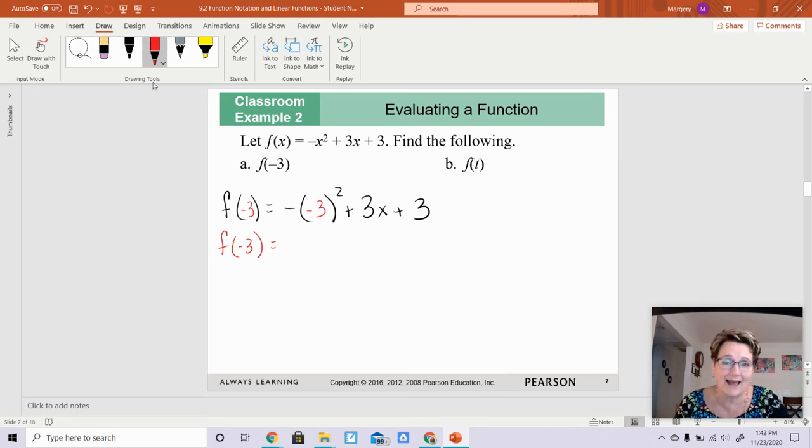Negative 3 squared is 9. 9 times the negative is negative 9. Now, I totally forgot to put a little blank spot here. That was my bad. Remember, that was where x was. I'm going to put negative 3 in here because wherever there was an x, you need to put in the negative 3. Now, positive 3 times negative 3 gives you negative 9. And then we have plus 3 here. So negative 9 plus negative 9 is negative 18. Negative 18 plus 3 is negative 15.